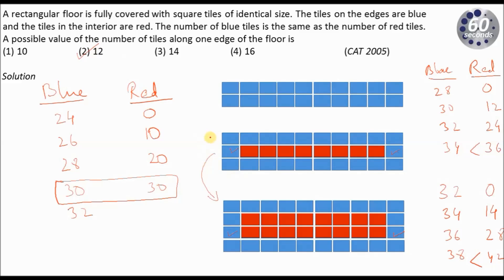So the only case where blue tiles and red tiles become equal is when I take the number of tiles on one edge to be 12. This has to be my answer. What I am trying to show is that without using any mathematical expressions with X and Y, you can solve this question just by using common sense and a little imagination. I hope this approach is clear. If you have any questions, please post them below and I will try to answer them as soon as possible. Thank you.